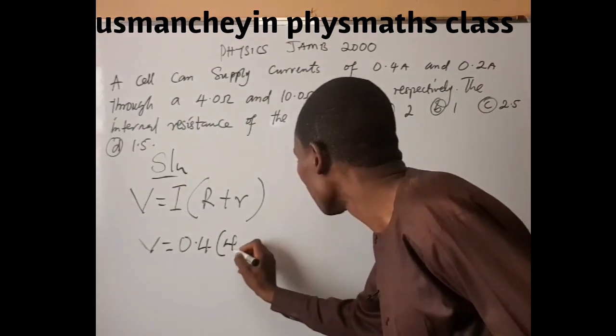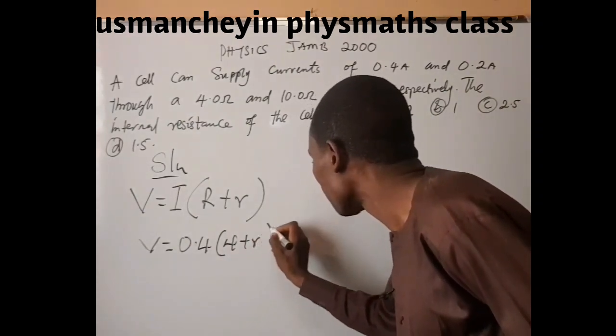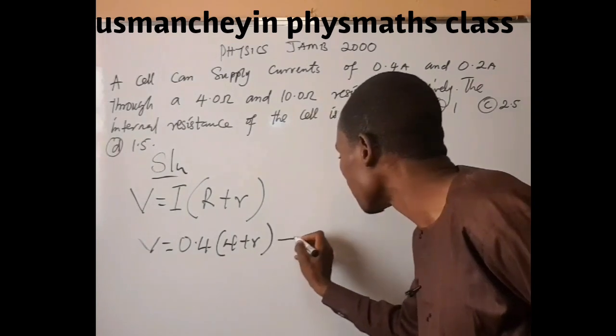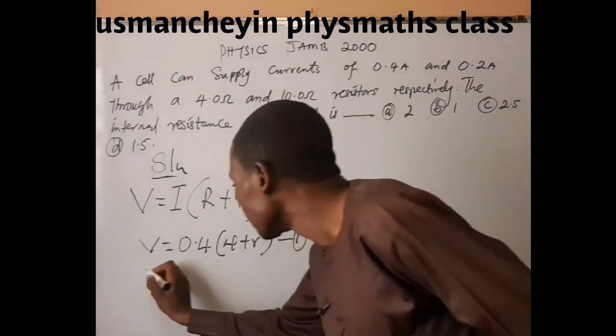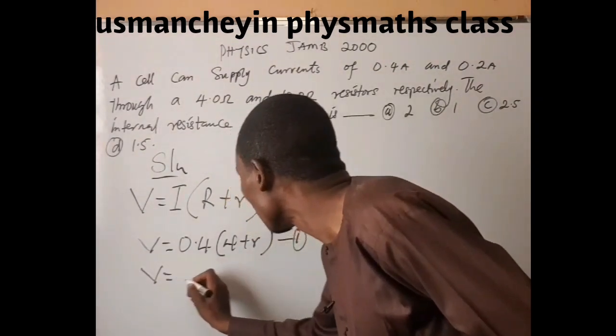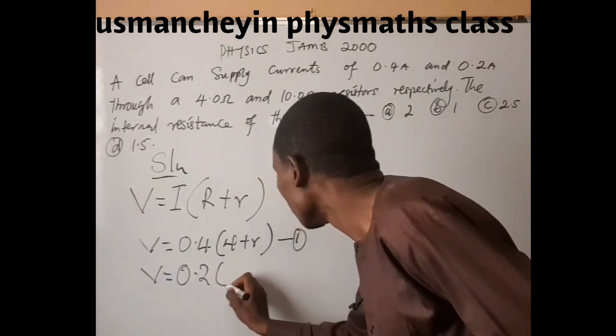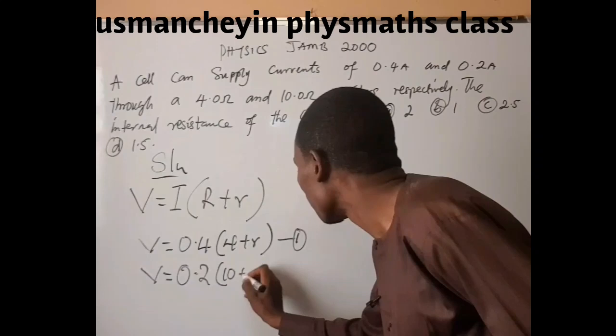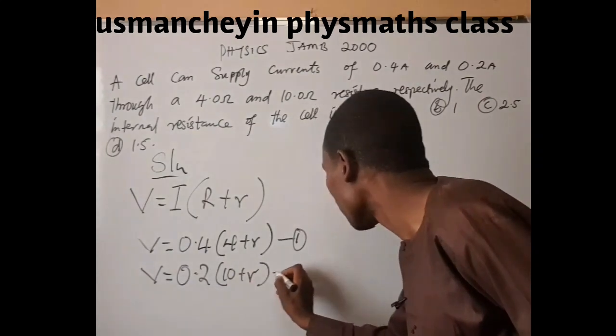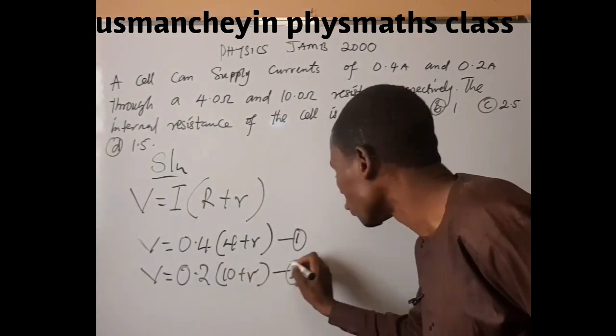The second case: V equals 0.2 into (10 plus R). This can be our equation 2.